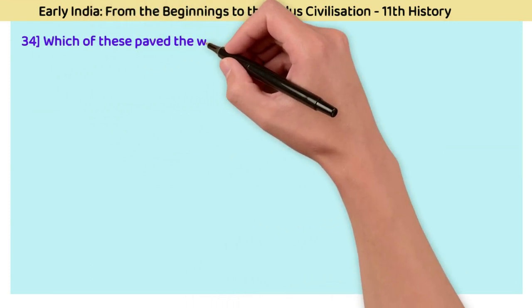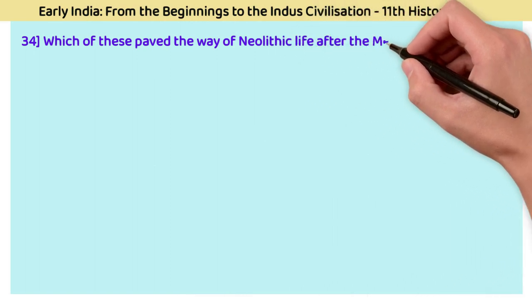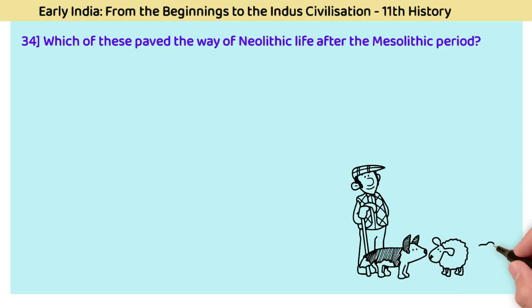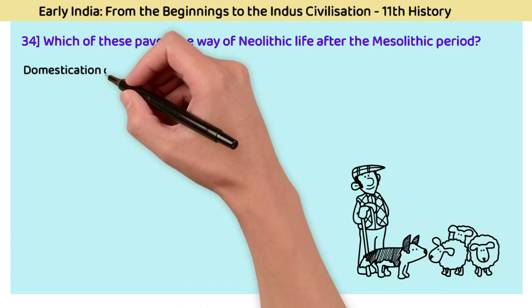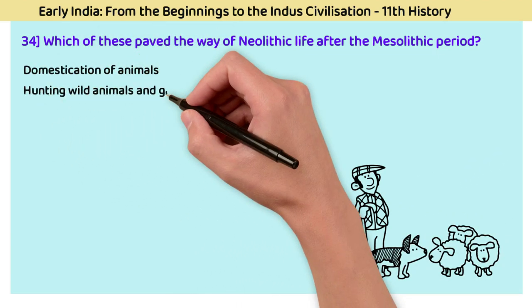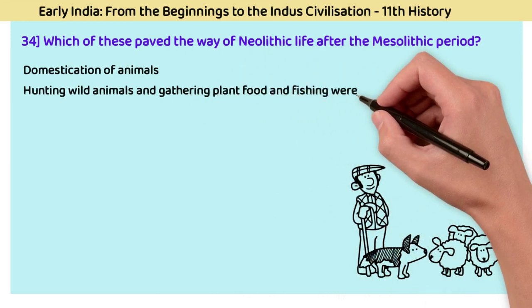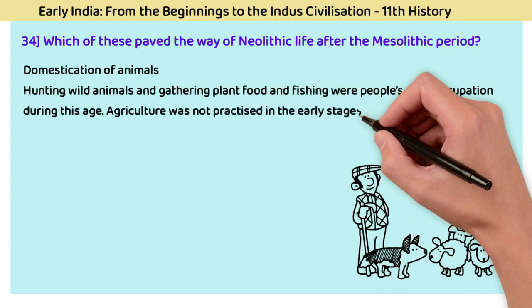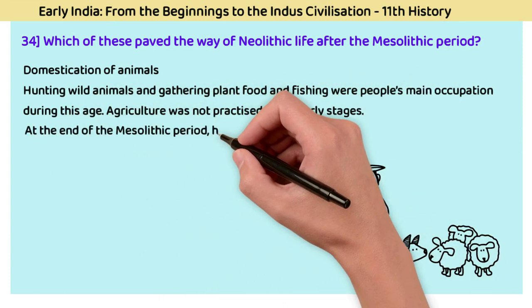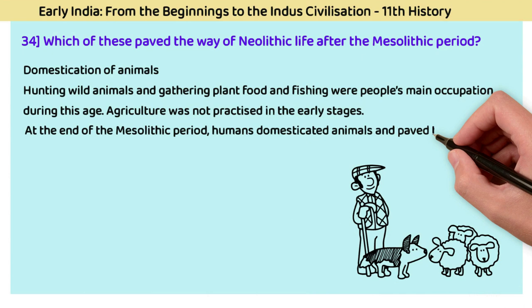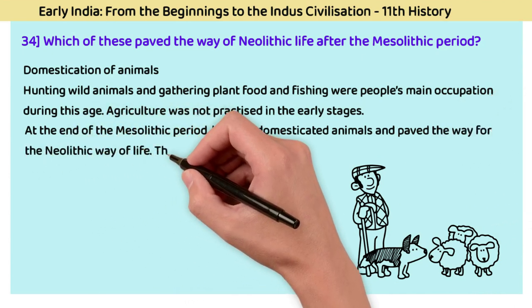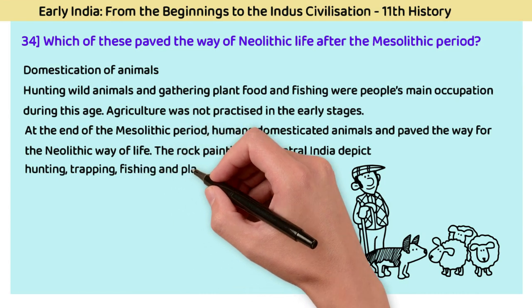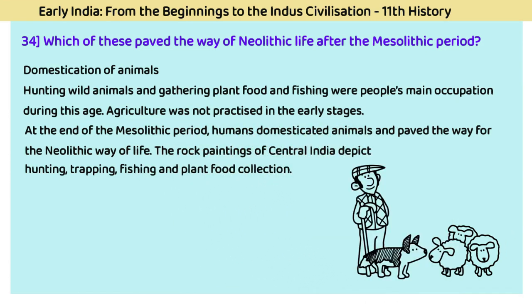Question 34: Which development paved the way for Neolithic life after the Mesolithic period? The answer is domestication of animals. Hunting wild animals, gathering plant food, and fishing were people's main occupations during the Mesolithic age. Agriculture was not practiced in the early stages. At the end of the Mesolithic period, humans domesticated animals, paving the way for the Neolithic way of life. Rock paintings of central India depict hunting, trapping, fishing, and plant food collection.